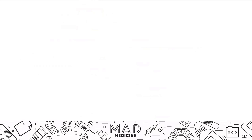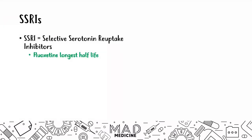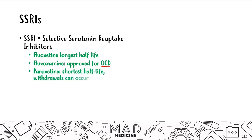You also need to know specific aspects of certain SSRIs. Fluoxetine has the longest half-life. Fluvoxamine is the only main SSRI approved for OCD, so for OCD that's the drug you want to use. Paroxetine has the shortest half-life, meaning it clears your body fastest and withdrawals can occur more easily compared to fluoxetine. Sertraline has the highest risk for GI upset.